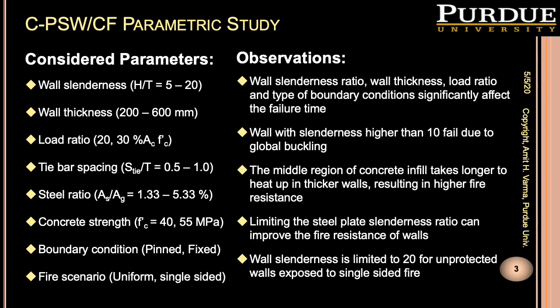The analytical parametric study showed that the fire resistance rating of composite plate shear walls decreases with an increase in the wall slenderness and load ratio. Since concrete has a low thermal conductivity, the temperature in the middle region of the concrete core increases at a lower rate in thicker walls. The cooler part of the concrete core helps to maintain the axial capacity of the composite plate shear walls during a fire event. Based on the numerical study results, it is recommended to limit the steel plate slenderness ratio.